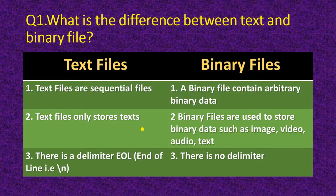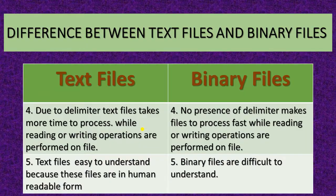Third, in text files there is a delimiter end of line, that is slash n. In binary files there is no delimiter. Fourth, due to the delimiter, text files take more time to process while reading or writing operations are performed on the file. In binary files, the absence of a delimiter makes the file process faster.